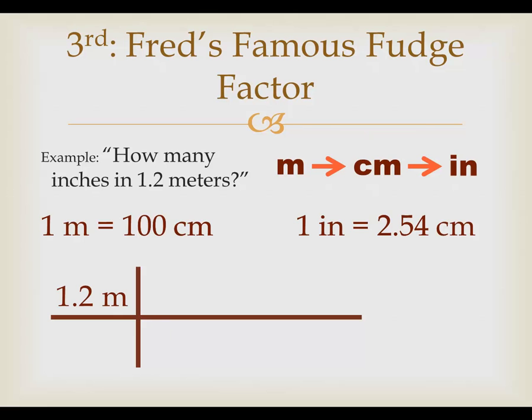So we've got meters on the top. How do we get rid of meters? Putting meters on the bottom of the next bay. That cancels out the meter, and the meter goes away, which is exactly what we want. We want to convert to the next thing, which in this case is centimeters. So meters to centimeters. Centimeters is now on top, and meters has been canceled out.